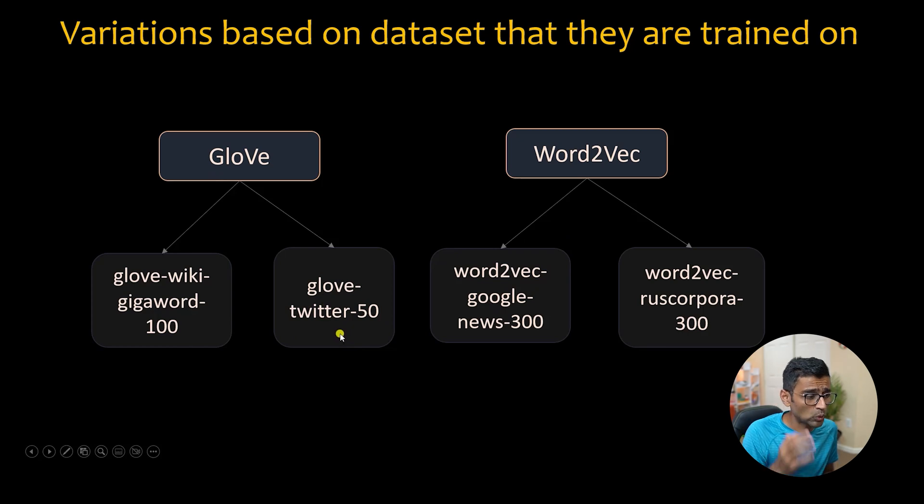If you train it on Twitter, let's say there is a GloVe Twitter 50 model which is available in gensim library, it will understand the tweets better. All the slang and all the short form that you use, it will understand that better. And then there could be a wiki gigaword GloVe version. There are so many different models but the basic techniques are GloVe, word2vec, fastText and so on.